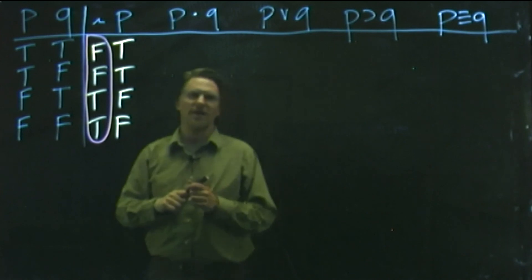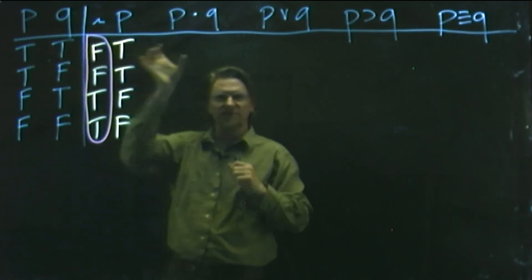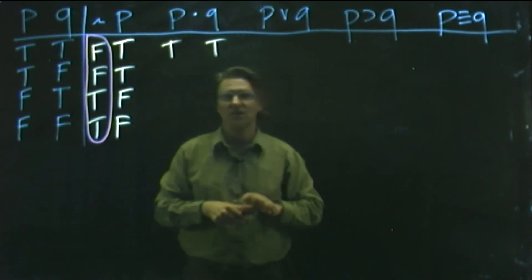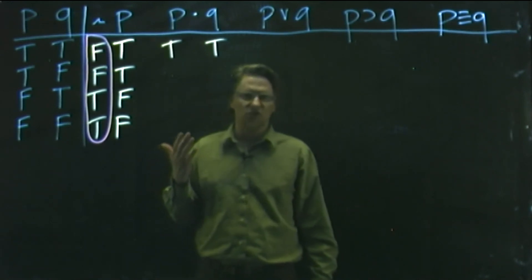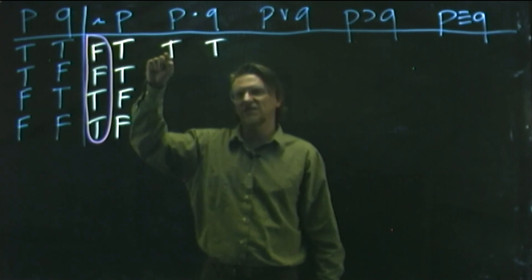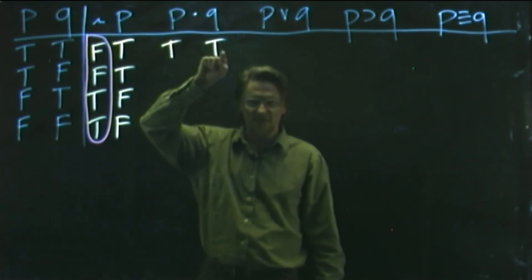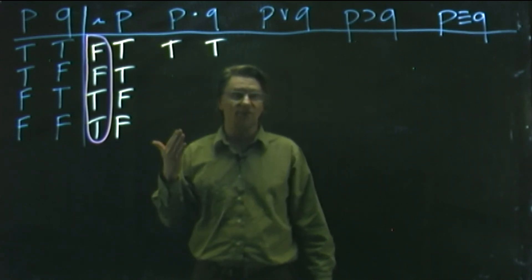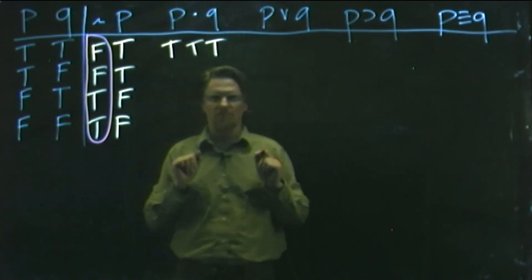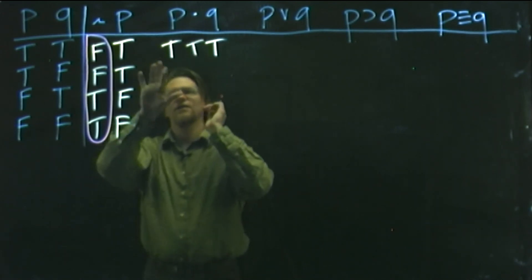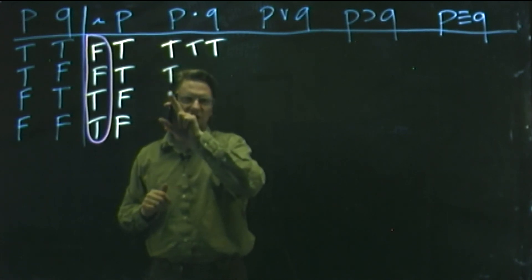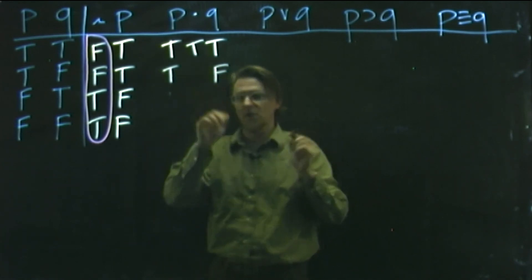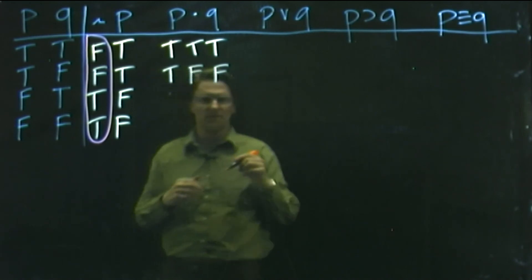When we get to the dot, we start using Q and can pull both values over. Let's see what happens when P is true and Q is true. If I told you Everett is in the state of Washington and Seattle is in the state of Washington, you would say that statement is true. On the other hand, if I told you Everett was in the state of Washington and Portland was in the state of Washington, you would say that's false.